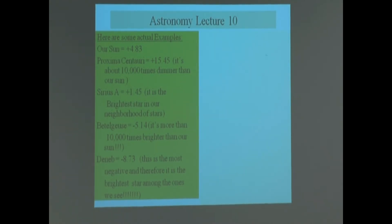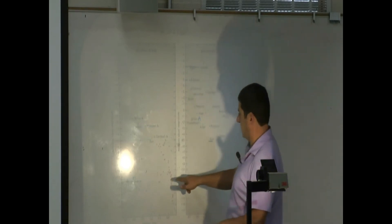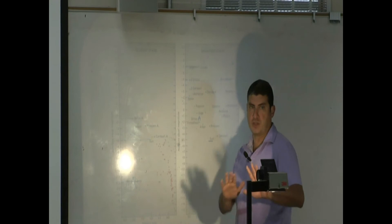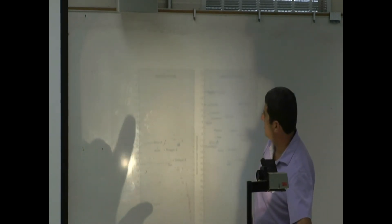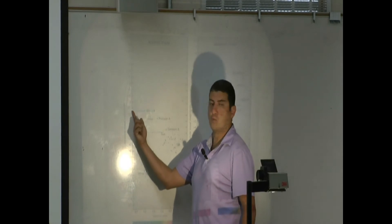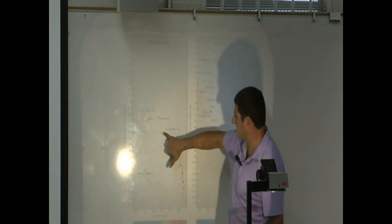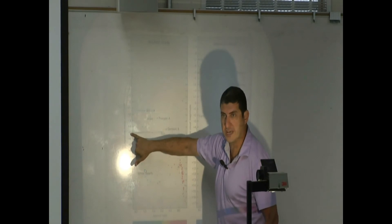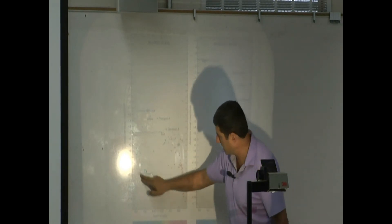We can show these on the HR diagram — you'll learn more about that later in this lecture. On the nearest stars plot, absolute visual magnitude is shown with negatives on top (brighter) and positives below (dimmer). Sirius A is the highest in our neighborhood at 1.45 absolute. Then you have Altair, Procyon, Alpha Centauri, and the Sun at about 4.83. Below the Sun are the red dwarfs, which are dimmer, and then some white dwarfs.